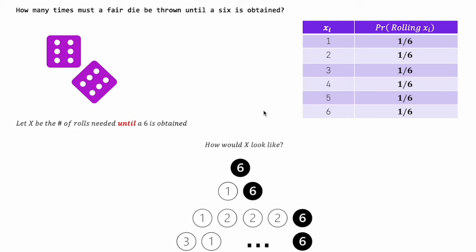So x could be really small, 1 or 2, x could even be really large, like 6, or 7, or 8, God knows how high. So clearly, x is a random variable.